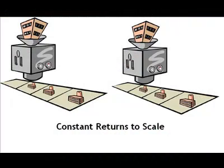One last characteristic about the aggregate production function is that it exhibits constant returns to scale. That is, doubling the amount of land, labor, and capital doubles the output. In this example, doubling the inputs and plant size doubles the output from 3 to 6.